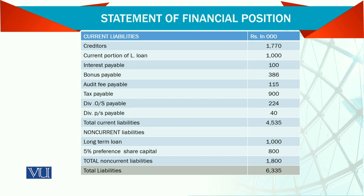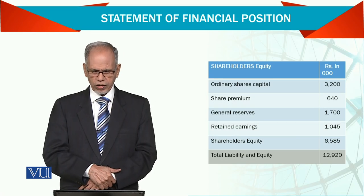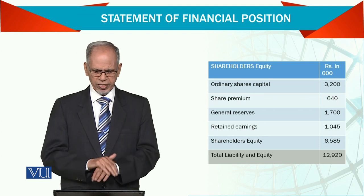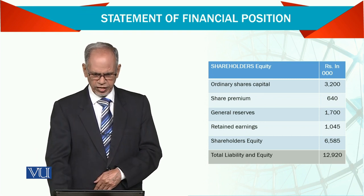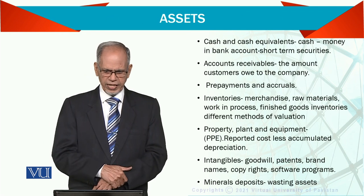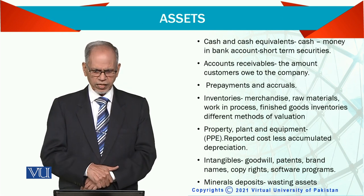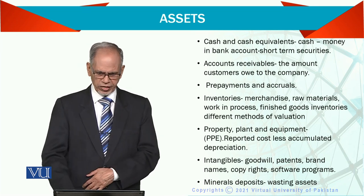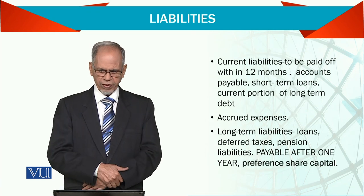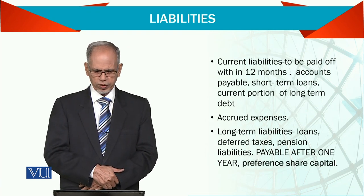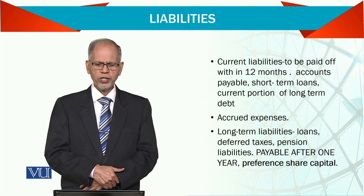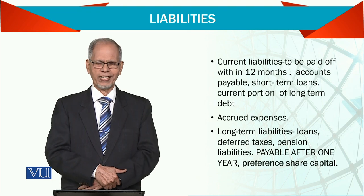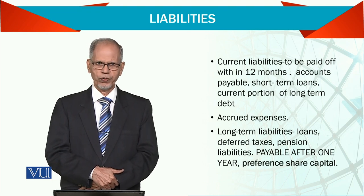Long-term loans and 5% preference shares are reported separately. Then shareholders' equity: ordinary shares, share premium, general reserve, retained earnings — giving total equity. The explanation of these assets is given in details — cash, accounts receivable, monetary property, etc. Current liabilities include accrued expenses; long-term liabilities include loans and deferred tax, and so on. These are the basics you have always studied in your previous courses. Thank you very much.